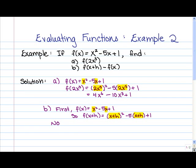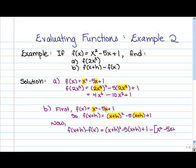So now what we can do is find the desired quantity, which was f(x+h) - f(x). So f(x+h), we just found to be (x+h)² - 5(x+h) + 1. And we're going to subtract f(x), which is x² - 5x + 1.